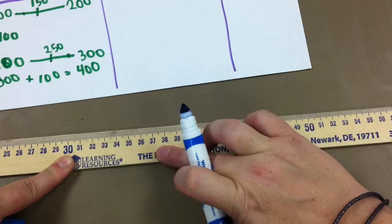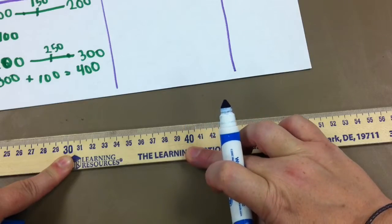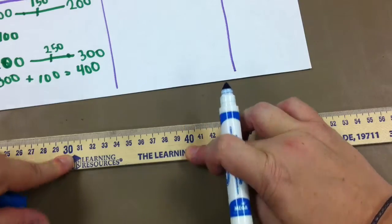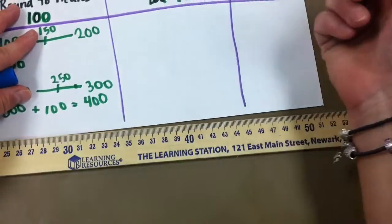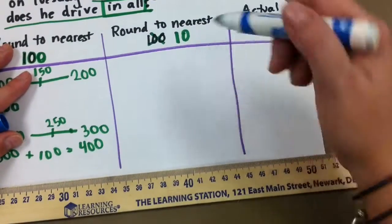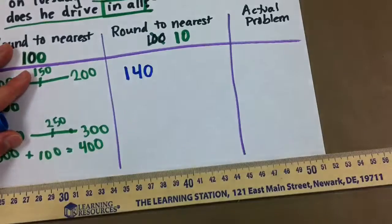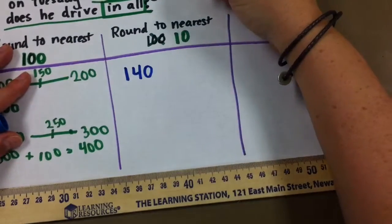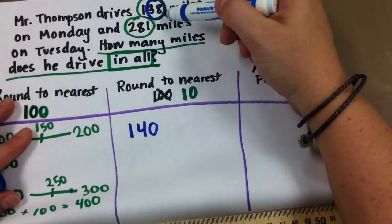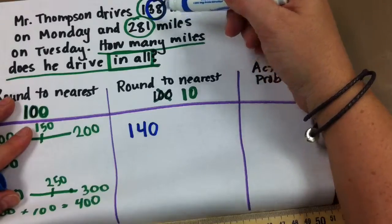38 is in between 30 and 40. And you can see 38 on that number line, boys and girls. I know you can. Here I'm going to point to it, and that is much closer to 40 than it is to 30. So I'm going to round 138 to 140 because 38 was closer to 40 than to 30.